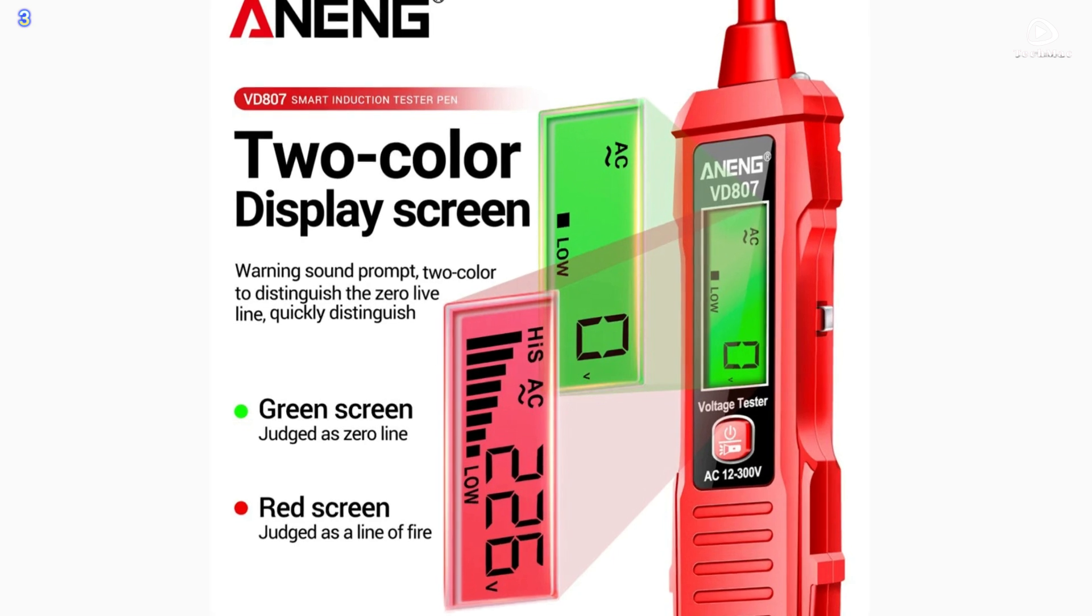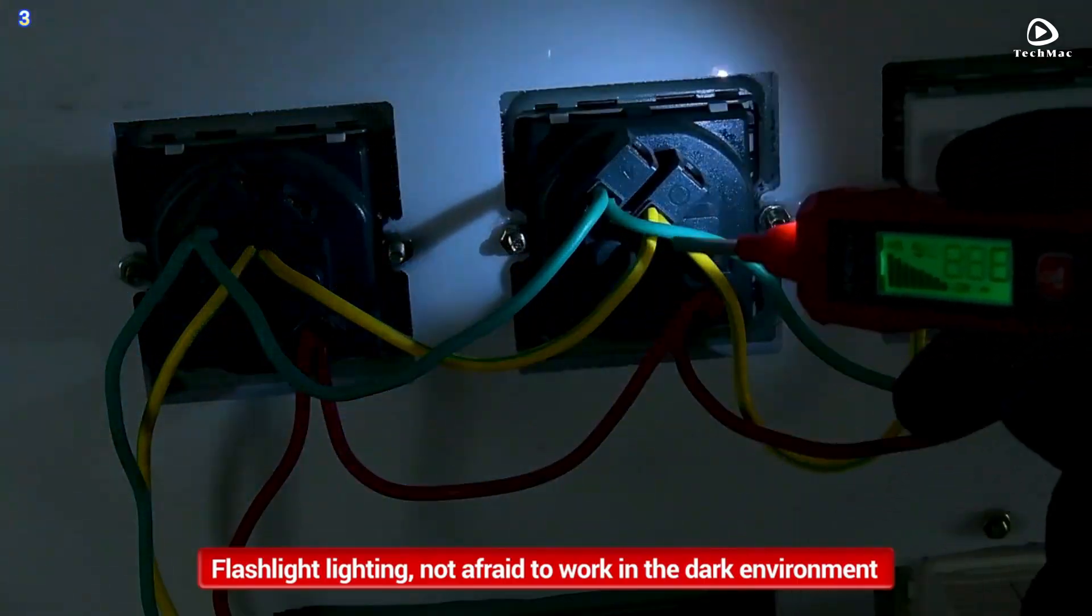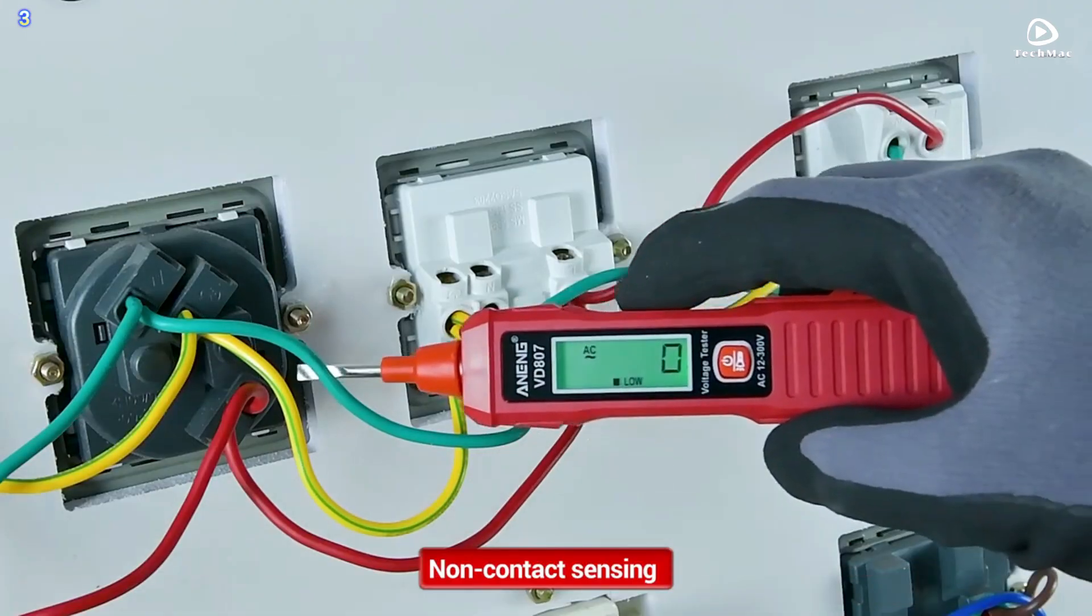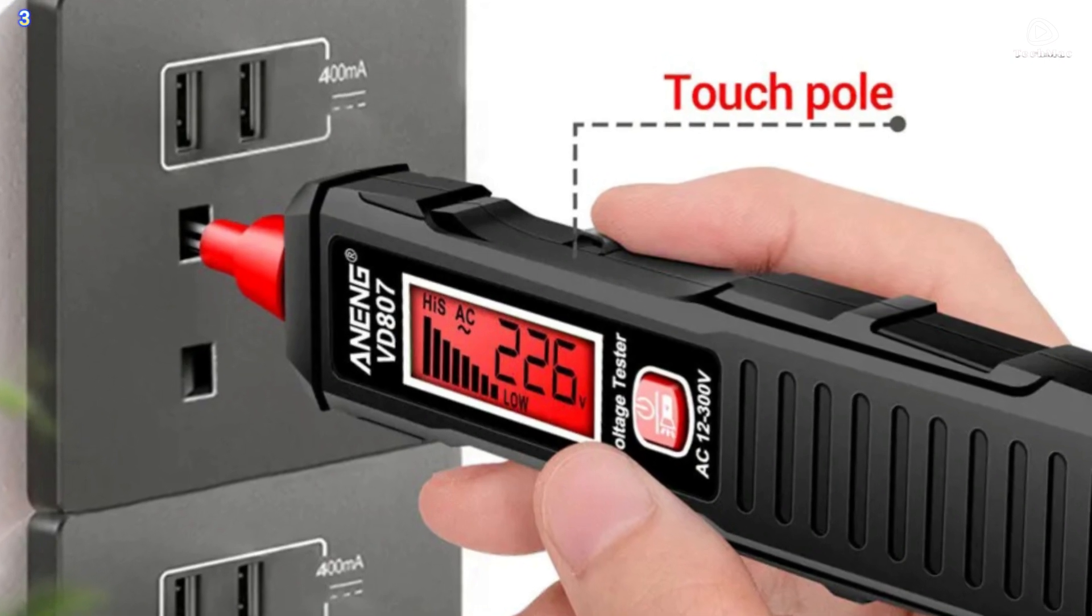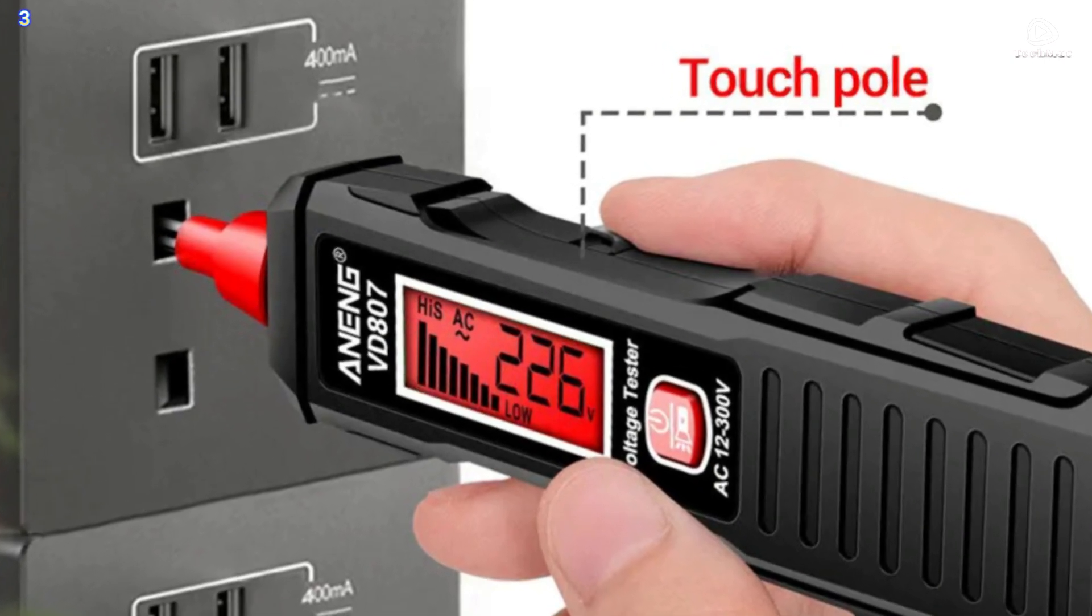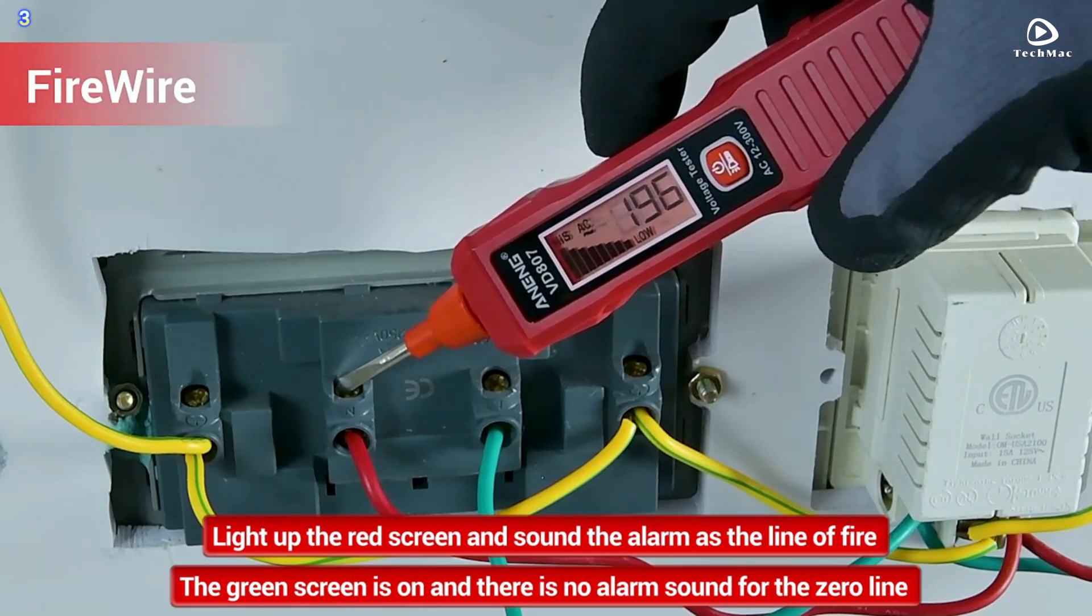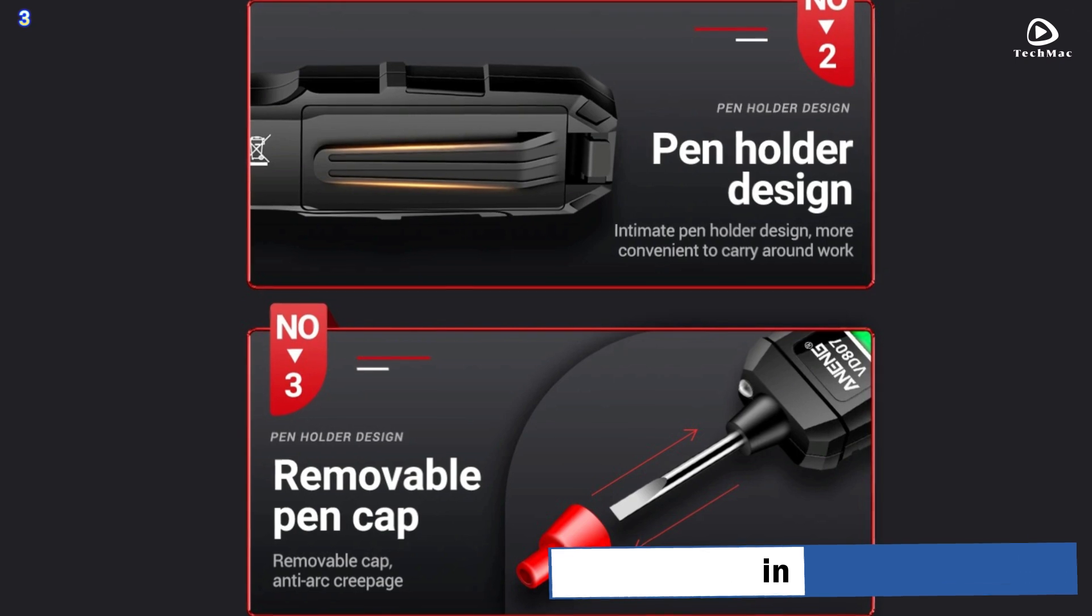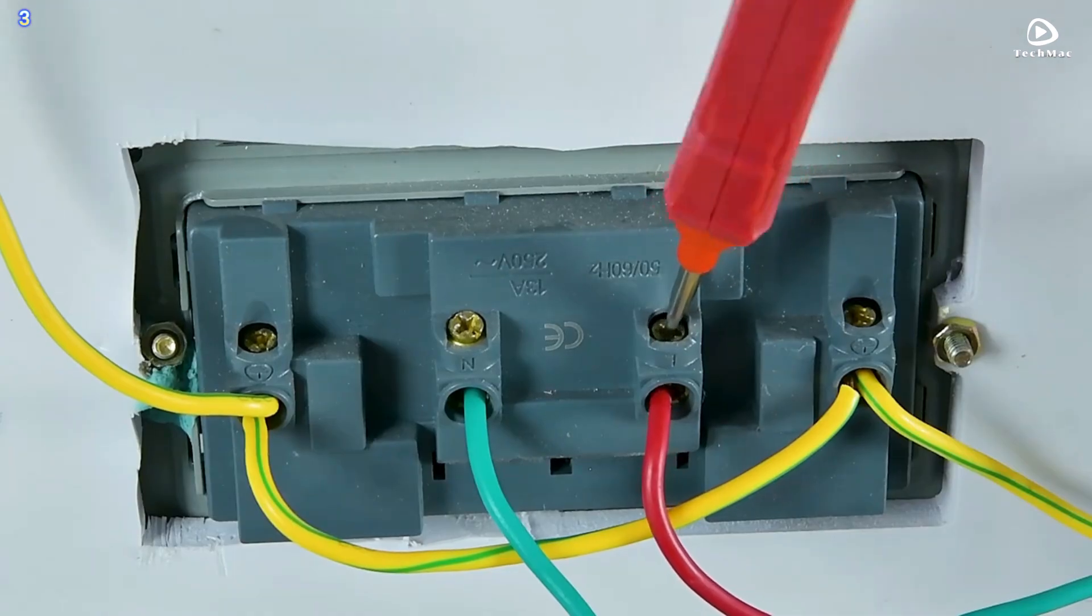Intelligent Zero Liveline Recognition: zero liveline recognition hand-touch pole, red screen and buzzer rush for live line. Green screen voltage, weak no alarm for zero line. The Anning VD807 features a clear digital display that shows real-time voltage readings. No more guessing or squinting at tiny numbers. The display is bright and easy to read, even in low-light conditions.